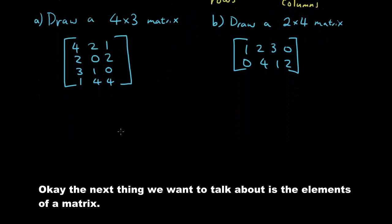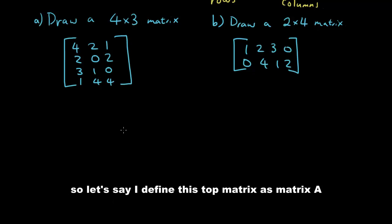The next thing we want to talk about is the elements of a matrix. So let's say I define this top matrix as matrix A and I'm going to call the second matrix, give it symbol B.